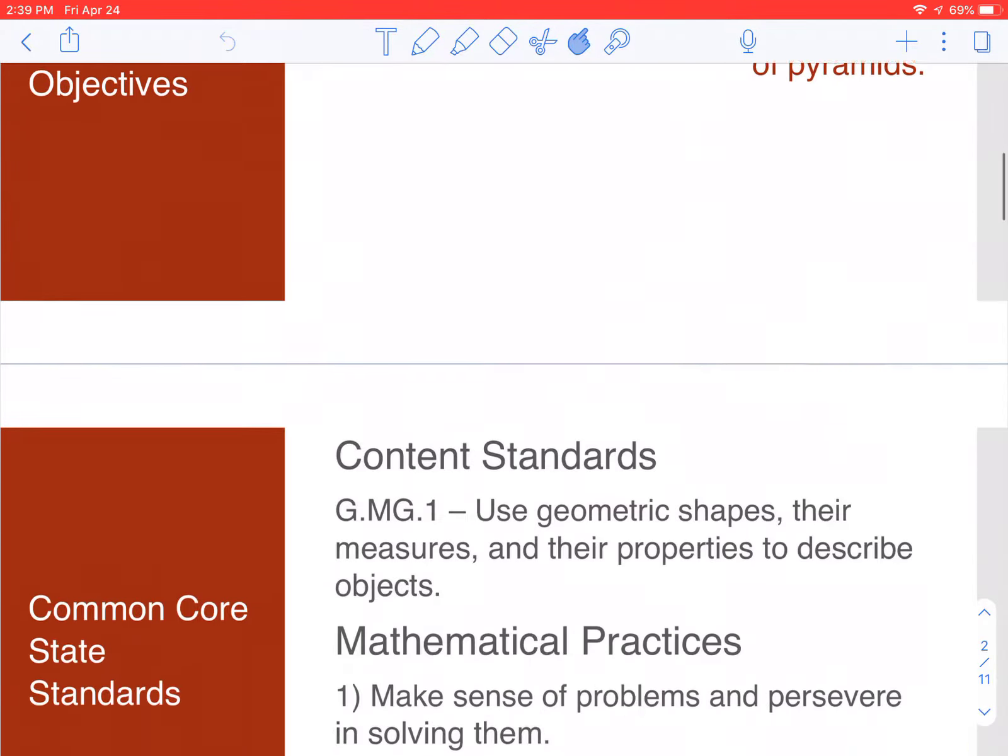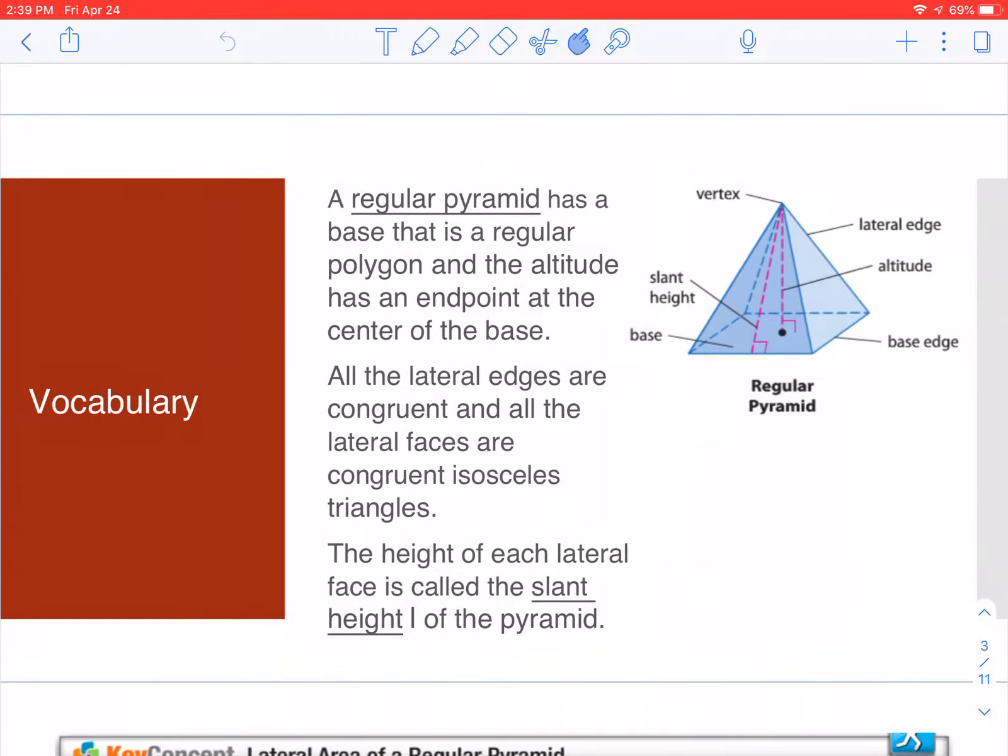We're going to find lateral and surface area. Here's a pyramid. The main things you need to know: slant height and altitude are two different things. The slant height is on the face of that triangle, and the altitude is inside the pyramid. Both form right angles.